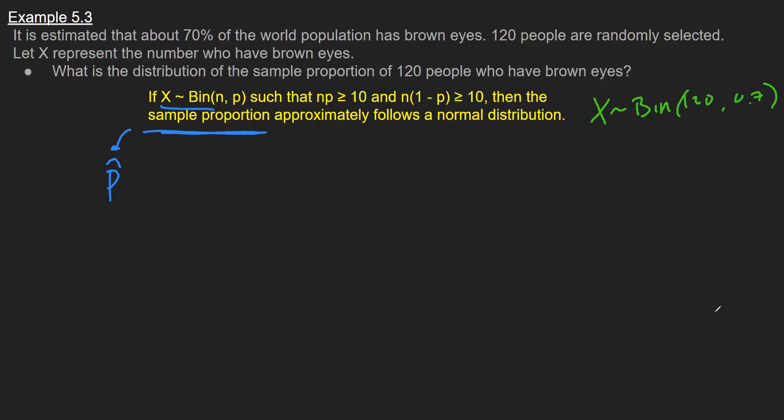We've got the binomial, the n times p, the n times 1 minus p. Then we can distribute this p hat as being normal. Now I just have to check the three. We have the binomial checked. Now n times p would just be 120 times 0.7, and I can see that is 84. And then n times 1 minus p, that is 120 times 0.3, and that gives me 36. So my conclusion here is satisfied that p hat follows a normal distribution.